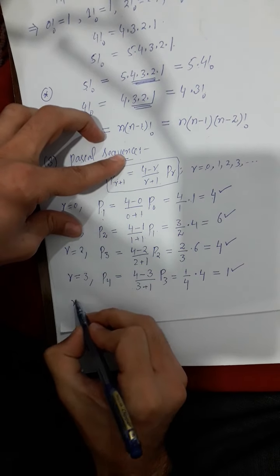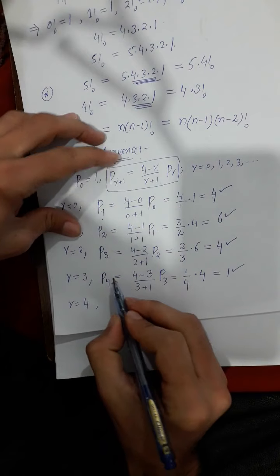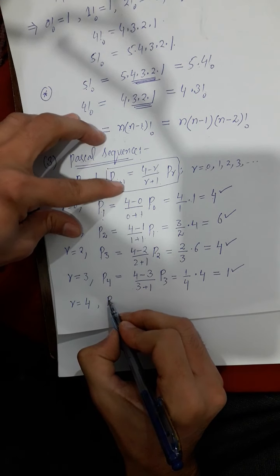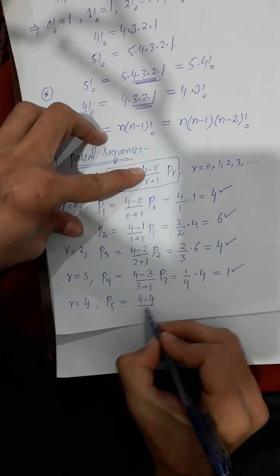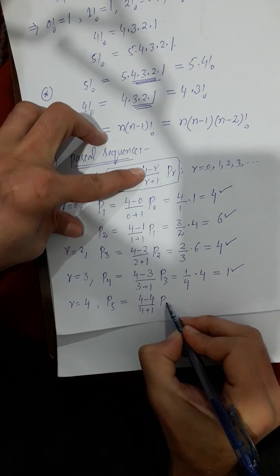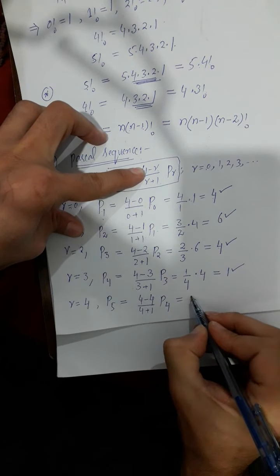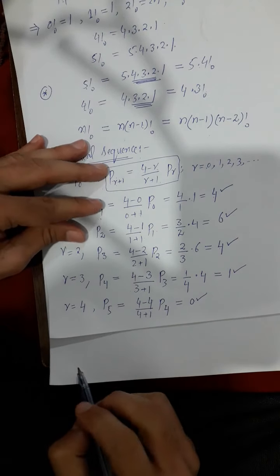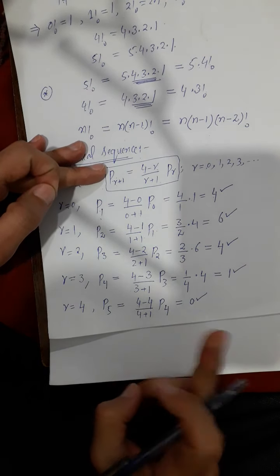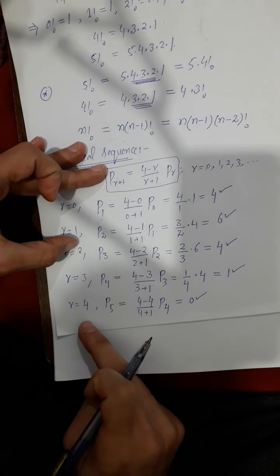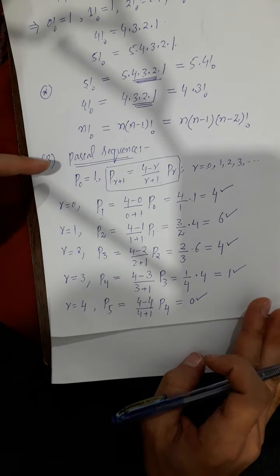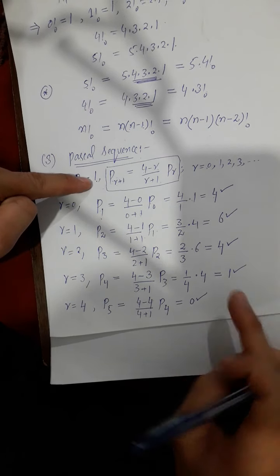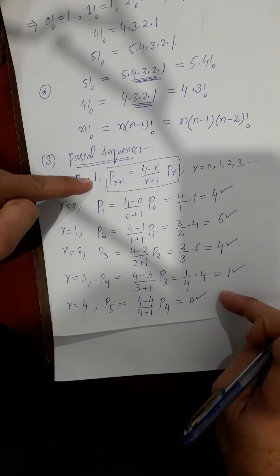When we put R equals to 4, P5 equals (4 minus 4) divided by (4 plus 1) times P4. Since 4 minus 4 equals zero, P5 equals 0. All subsequent terms — P6, P7, and so on — will also be zero, because each one uses the previous zero term. So the non-zero terms of this sequence are: 1, 4, 6, 4, 1. All remaining terms are zero.